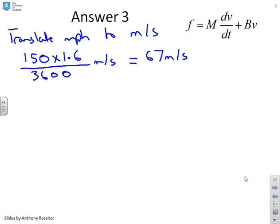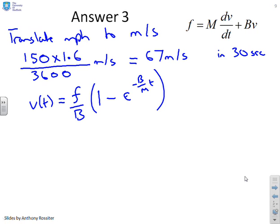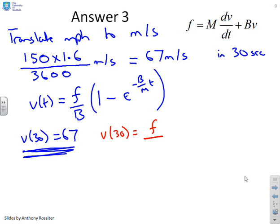So that's our target. And we were told we wanted to do that in 30 seconds. Now what I'm going to do is remind you of the formula we had on the second slide. What does the velocity actually do? So V of T is going to be F over B into 1 minus E to the minus B over MT. And what we've said is V of 30 equals 67. That's our requirement. So let's see whether we can satisfy that and what F is required.